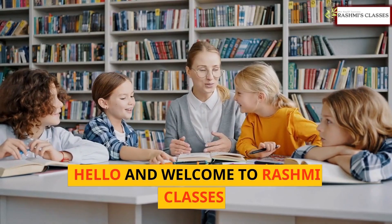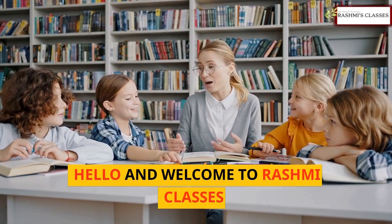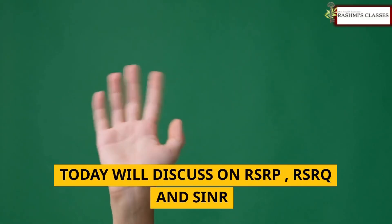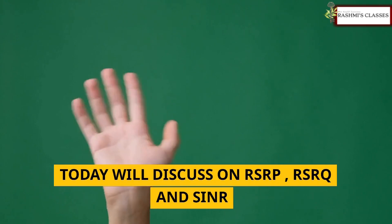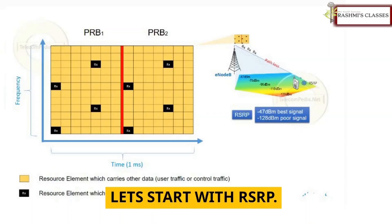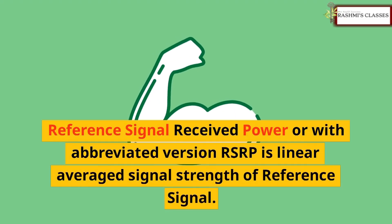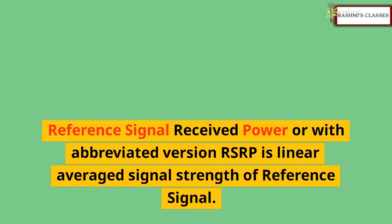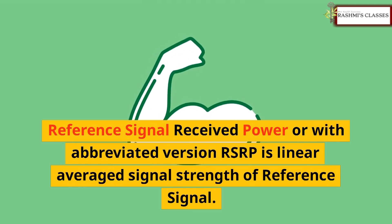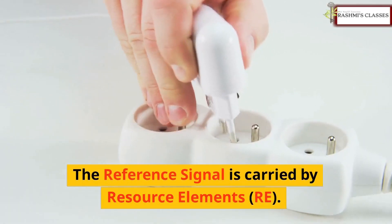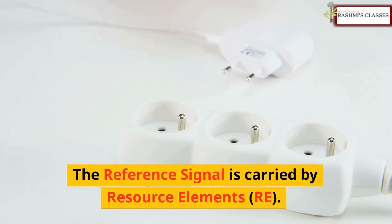Hello and welcome to Rush Me Classes. Today we'll discuss RSRP, RSRQ, and SINR. Let's start with RSRP — Reference Signal Received Power. RSRP is the linear average signal strength of the reference signal, which is carried by resource elements.